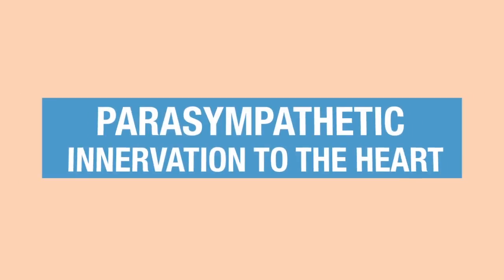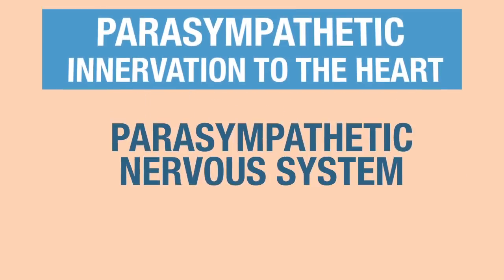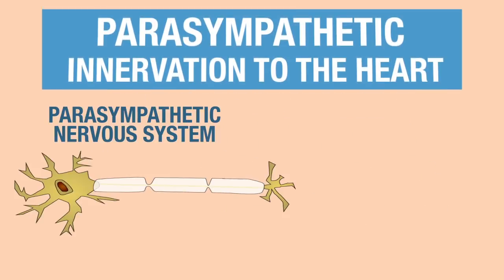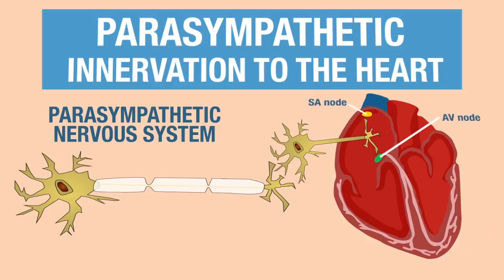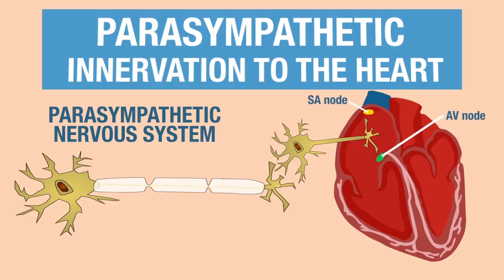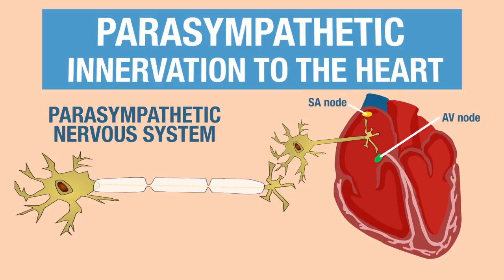The goal of this video is to discuss how the parasympathetic nervous system and its innervation to the SA and AV nodes in the heart can regulate heart rate.